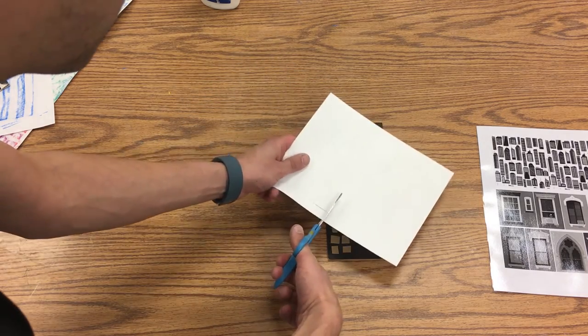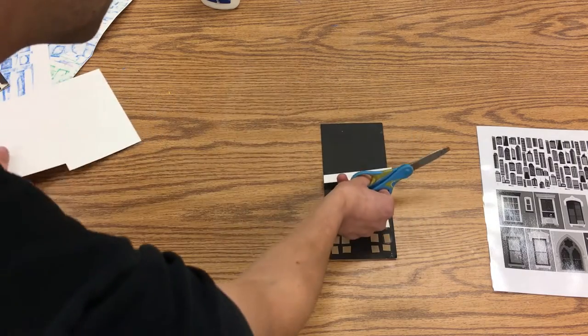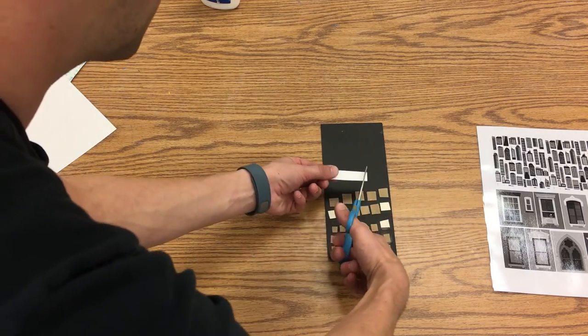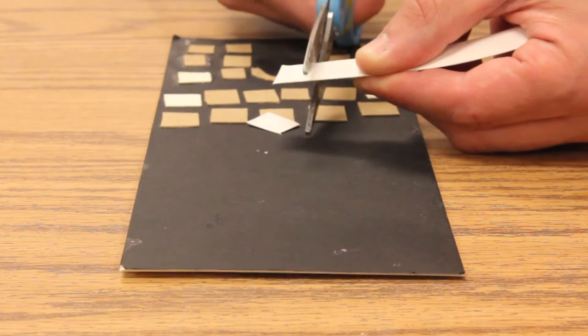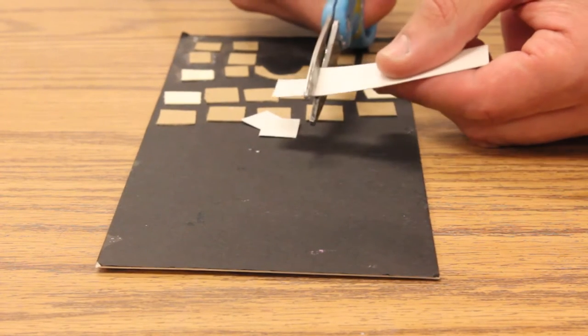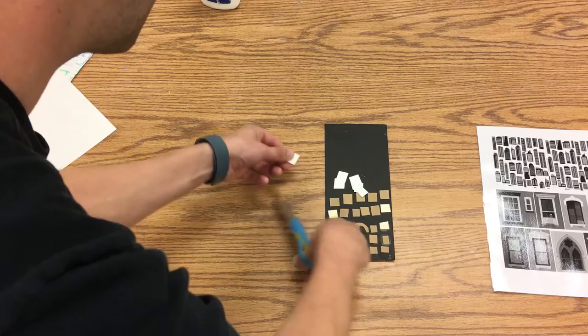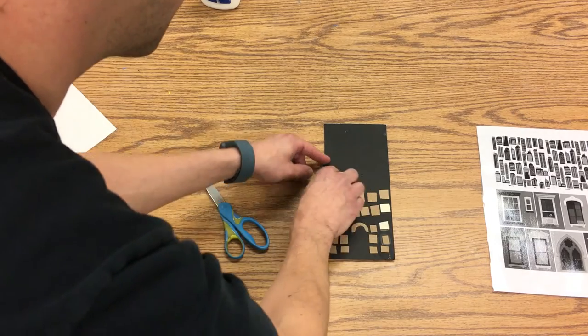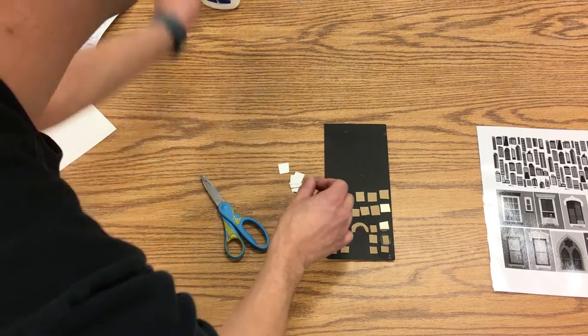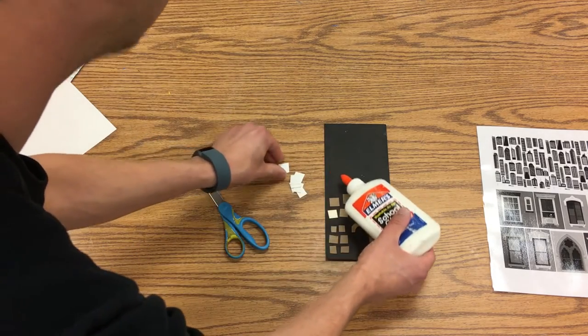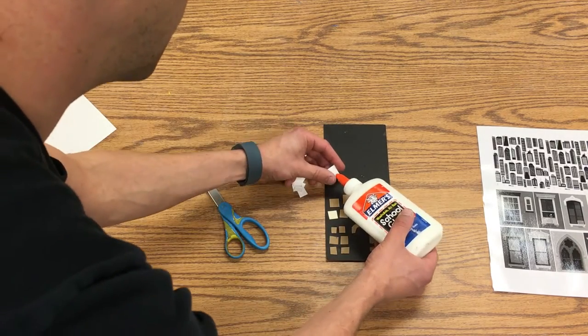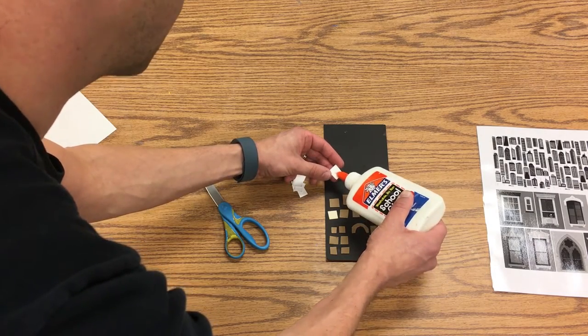And instead of just gluing that down, I'm going to cut several of them off like this, and that way they're all roughly the same size. Then all I have to do is take my glue and I just need about one dot on the back of a piece like this.